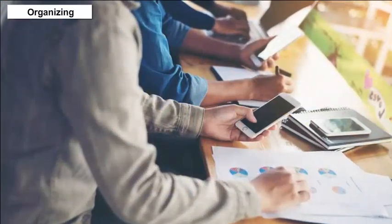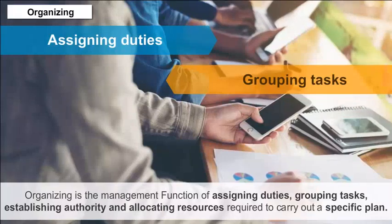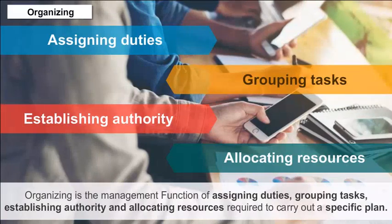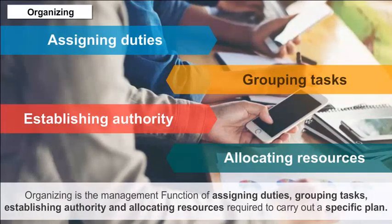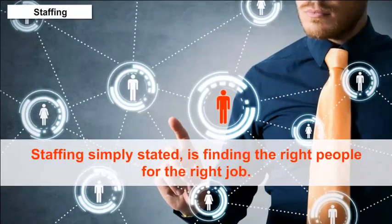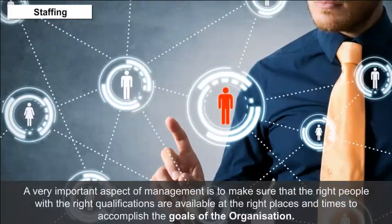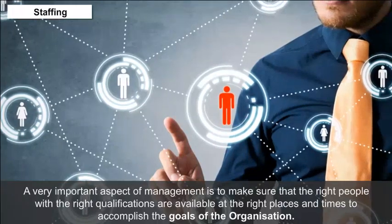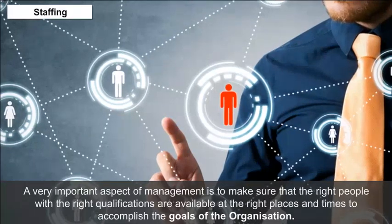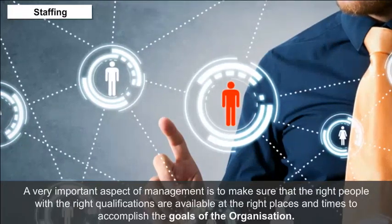Organizing: Organizing is the management function of assigning duties, grouping tasks, establishing authority and allocating resources required to carry out a specific plan. Staffing: Staffing is simply finding the right people for the right job. A very important aspect of management is to make sure that the right people with the right qualifications are available at the right places and times to accomplish the goals of the organization.